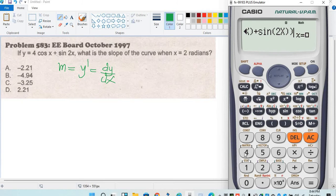Set x equal to 2, press equals, and we get negative 4.94. So the answer is letter B.